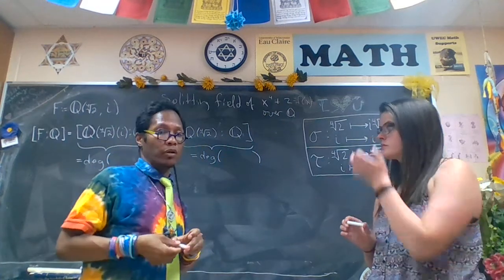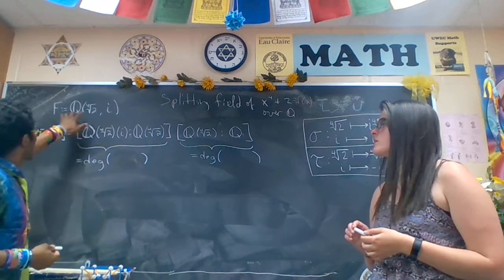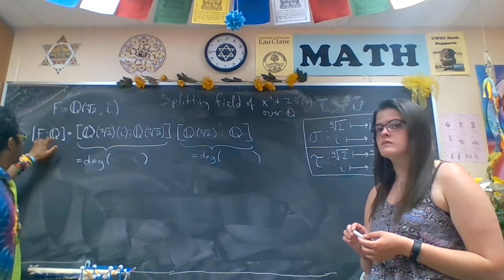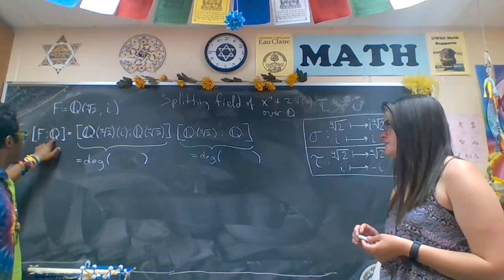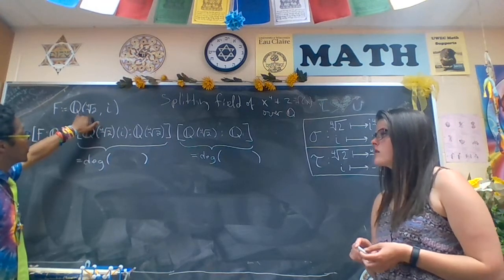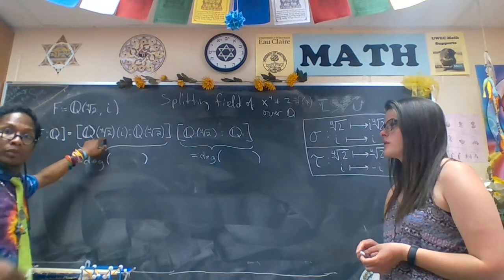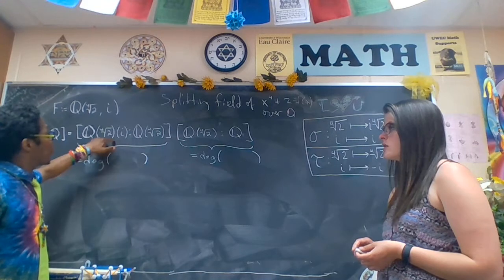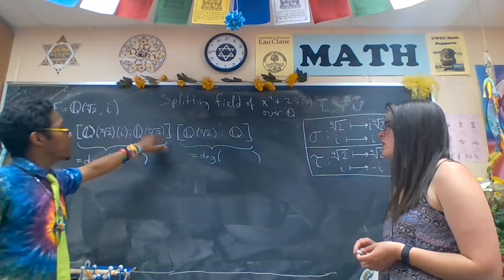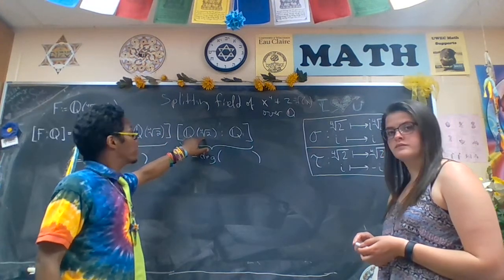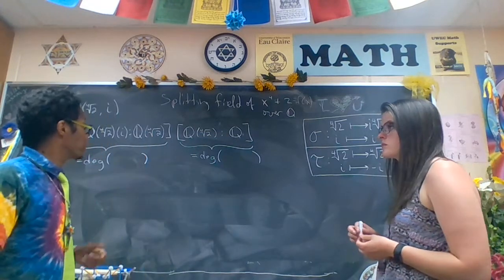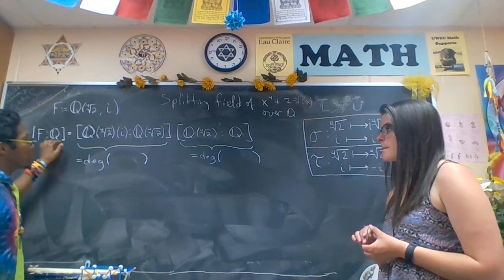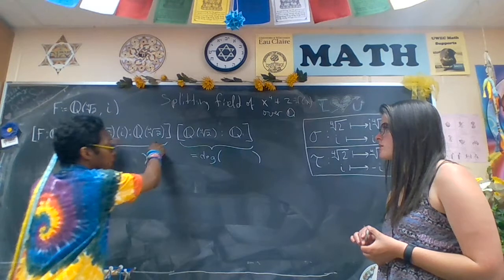So first of all, it helps to know the degree of this extension of the splitting field over Q. We're going to call it F for easy. So we want to know the degree of F over Q. Well, we can split this up. Since Q adjoined fourth root of two and i can be written as Q adjoined fourth root of two adjoined i, we're going to consider that field over the field Q adjoined fourth root of two, and then consider the degree of Q adjoined fourth root of two over Q. Dedekind's product theorem, or the tower law, says that this dimension of F over Q is equal to the dimension of this over that times dimension of this over that.